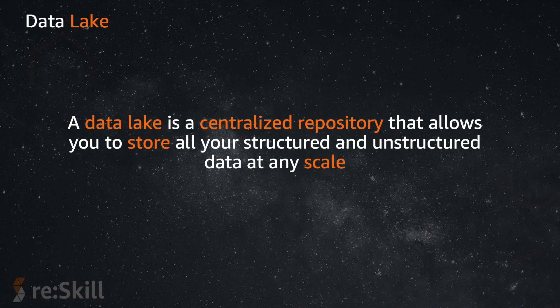When you look at AWS, the ultimate objective for any data analyst or data engineer is to make sure that their data is in a centralized repository, so you don't have to go to different places to consume it. This is what the data lake definition is. In a nutshell, a data lake is a centralized repository that allows you to store all structured and unstructured data at scale. In AWS, that would typically be an S3 bucket, and you put all the data there. Over time, you can make use of the data by integrating it with different services.